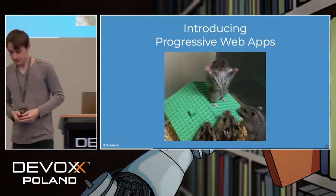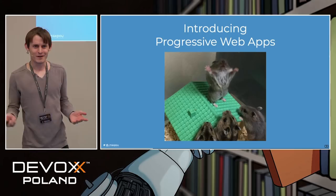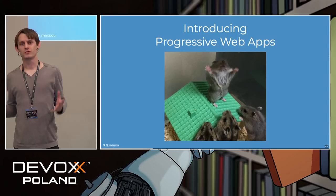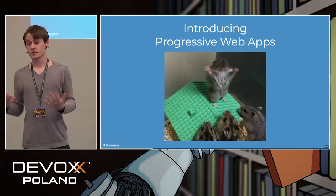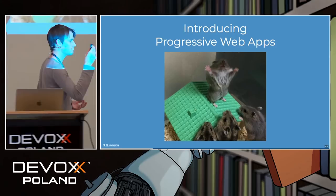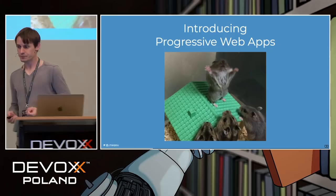Some people said: we have the web, which is great for reaching new people, and we have the native app, which can do a lot of things but is hard to reach people with. So could we put them on the same level and get the best of both? That's something called Progressive Web Apps. Before updating your LinkedIn profile, keep calm — it's nothing else than a set of rules to follow for your existing website.